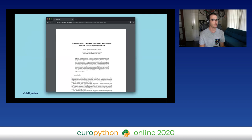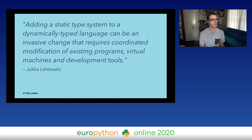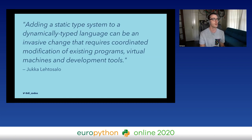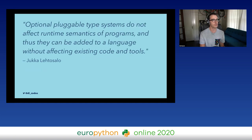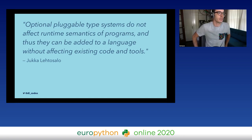He published his thesis in 2011. He found that adding a static type system to a dynamically typed language can be a really invasive change — requiring coordinated modification of programs, virtual machines, and development tools; basically everything the language touches would have to be changed. But he found that adding an optional, pluggable type system would not affect the runtime semantics of the program and could be added to a language without affecting existing code or tools. This sounds really great for Python, since we're already a dynamic language and being able to statically type things optionally makes a lot of sense.